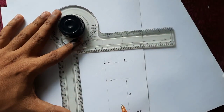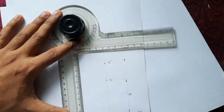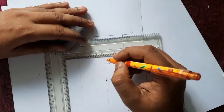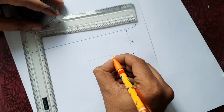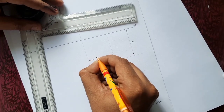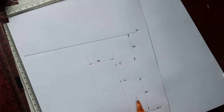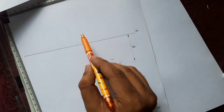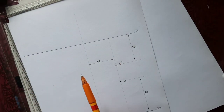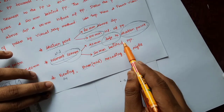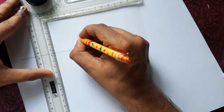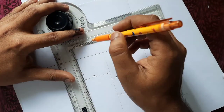I mark the reference corner, which is 20 mm behind the picture plane. This is the nearest corner — the reference point for the solid, located 40 mm left of the station point and 20 mm behind the picture plane.